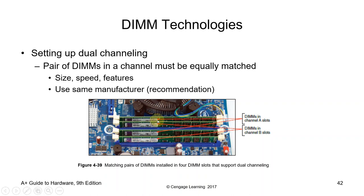Requirements for dual-channel mode: arrange DIMMs in pairs in every memory channel. Identical module capacity — whether 128 MB, 256 MB, 512 MB, 1 GB, etc. Identical DRAM technology and bus width of the module pair. Both modules must be either only single-sided (one rank) or only dual-sided (two ranks). Note: configurations that do not fulfill these requirements automatically work in single-channel mode.